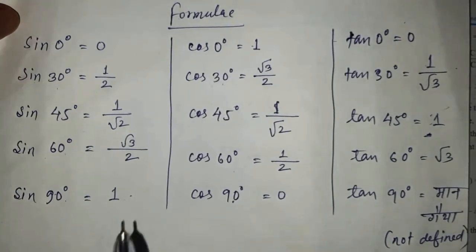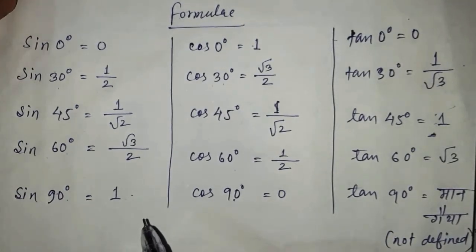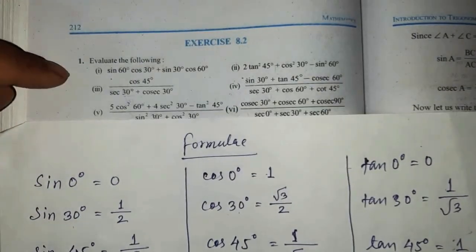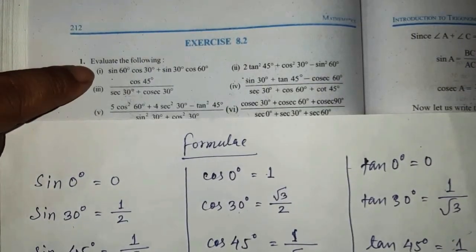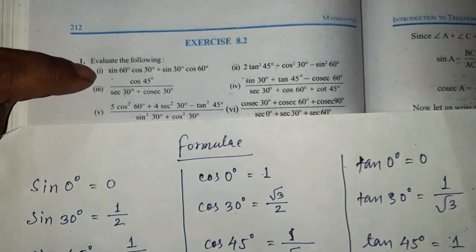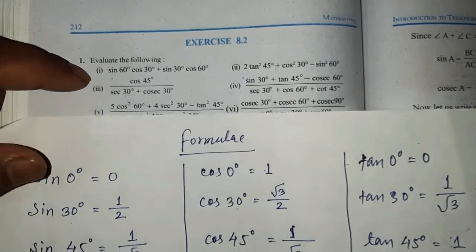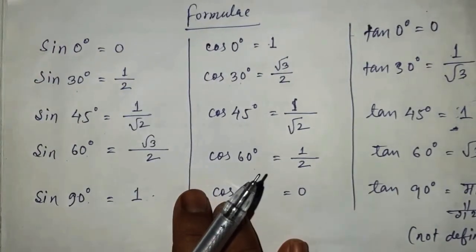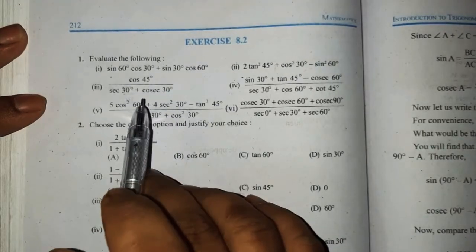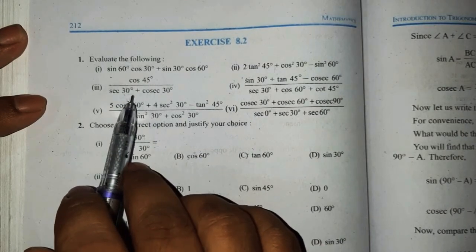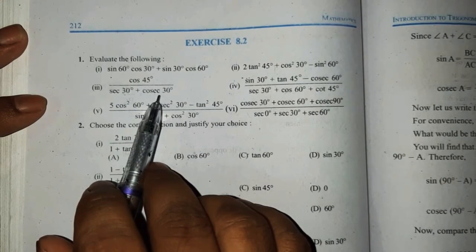For question number 1, we have to find the value. In this case, the cos of 65 degrees is the same as the cos of 45 degrees. Then we will do cos of 75 degrees.